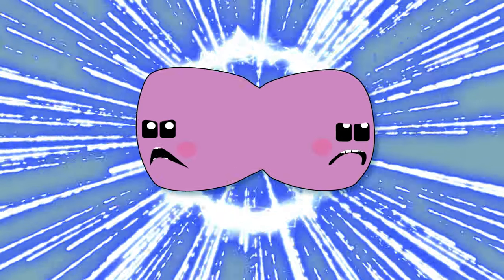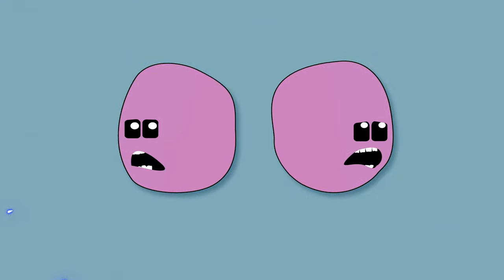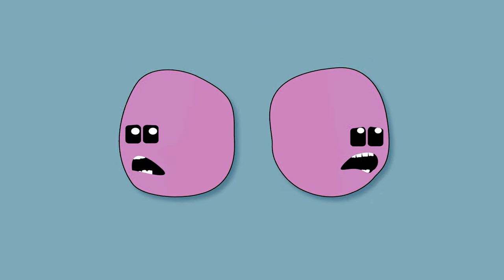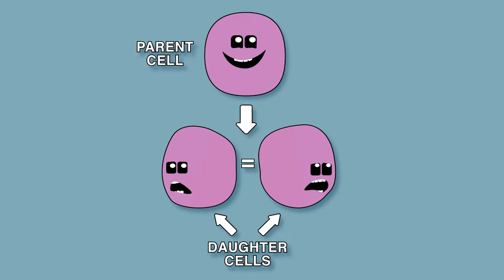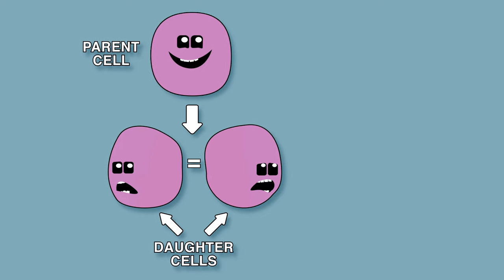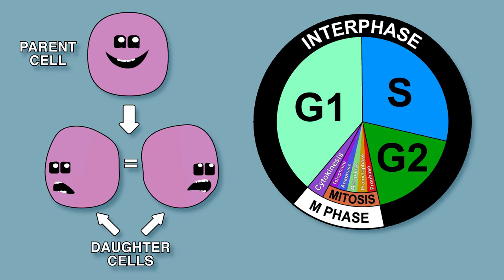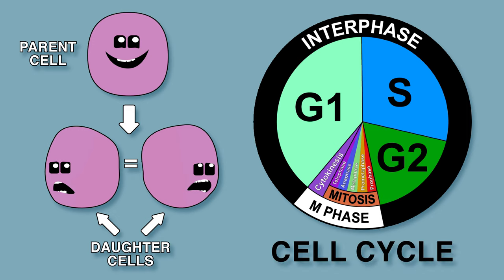The only way to create a new cell is to duplicate a pre-existing one. The original cell is called the parent cell, and the two new cells, which are genetically identical, are called daughter cells. The series of steps leading to and involving the duplication of a cell is called the cell cycle.